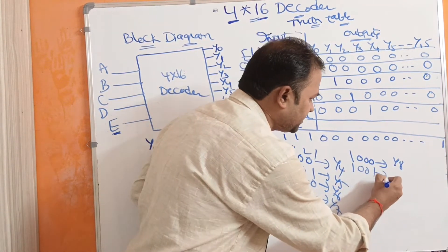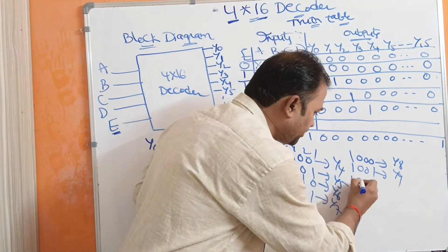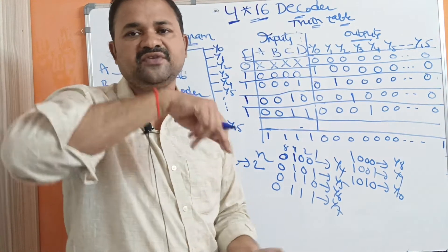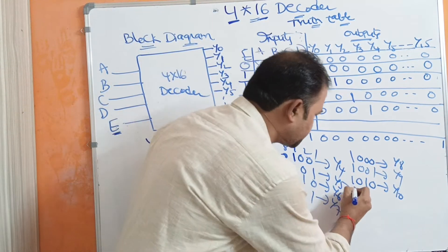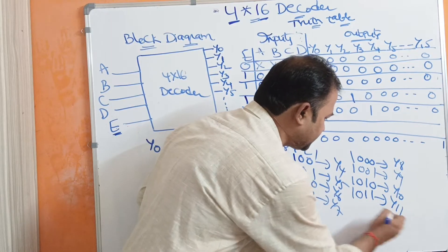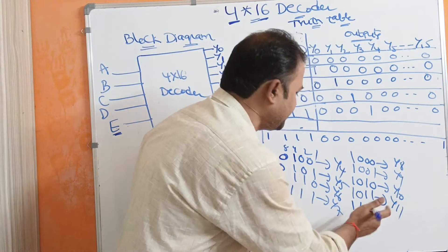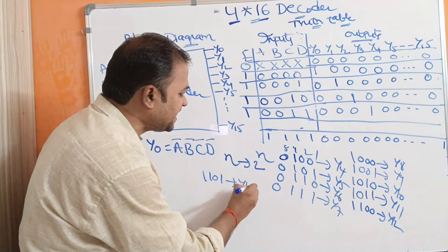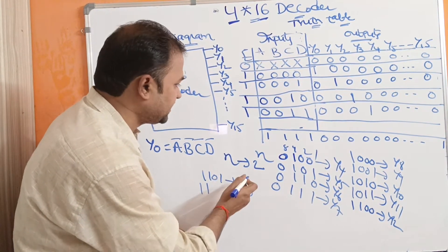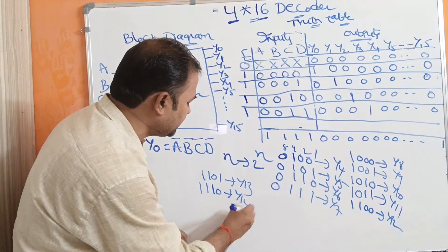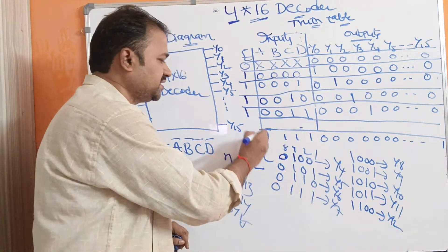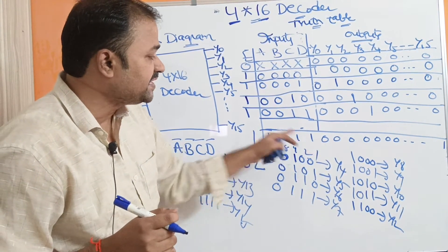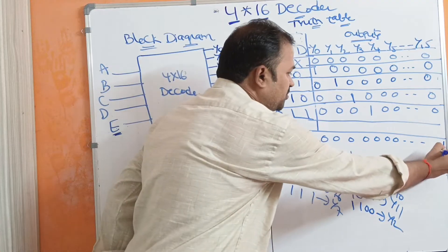If the input is 1001, then the decoder's output Y9 is active. If the input is 1010, then the decoder's output Y10 is active — Y10 is 1, whereas the remaining outputs are 0s. 1011 means Y11 is active. 1100 means Y12 is active. 1101 means Y13 is active. 1110 means Y14 is active. 1111 means Y15 is active. If the enable input is 1 and the input combination is all 1s, decoder's output Y15 is active.